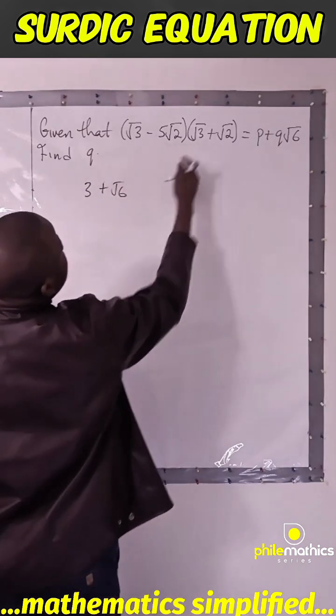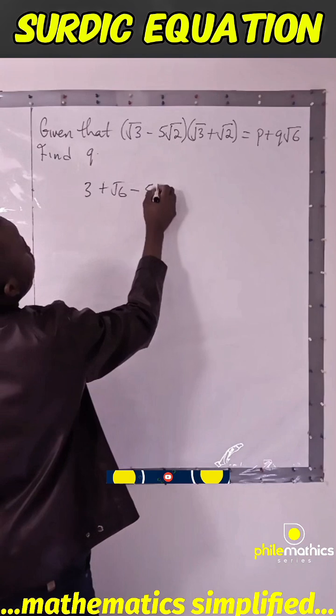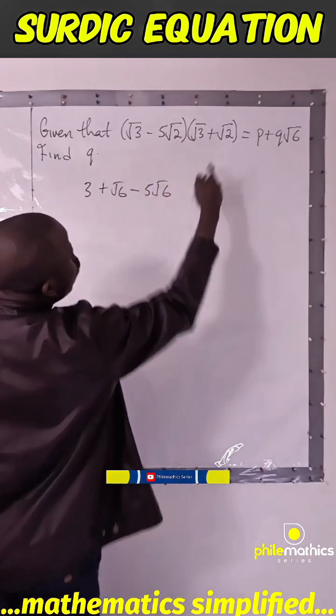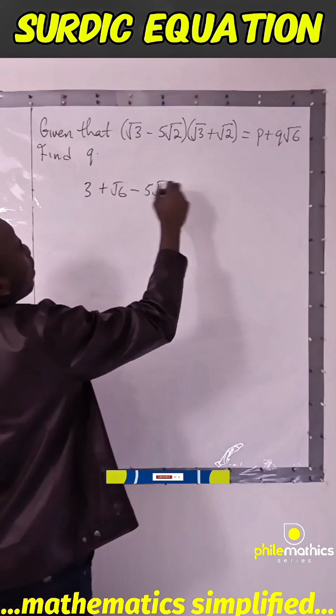This times this will give me minus 5√6. This times this will give me √2 times √2 which is 2, times 5 is minus 10.